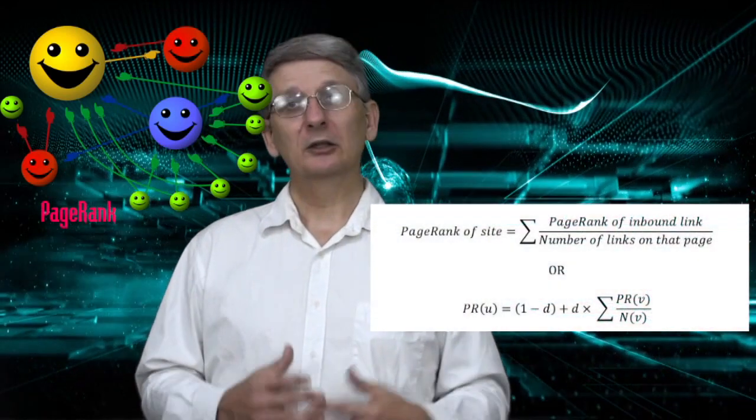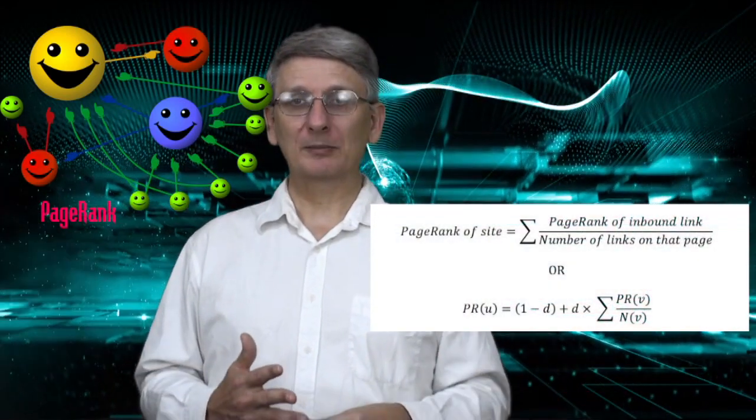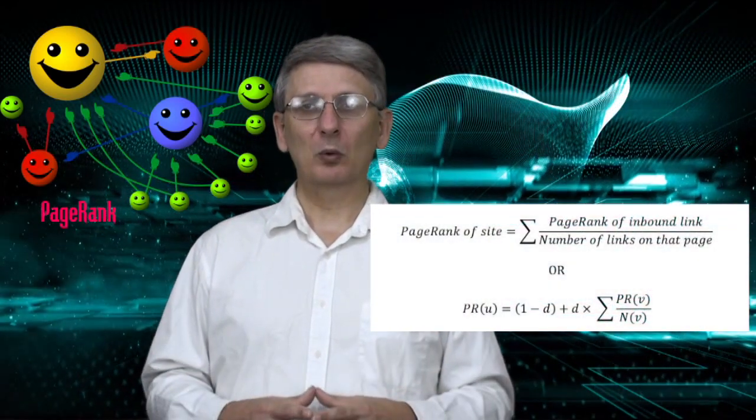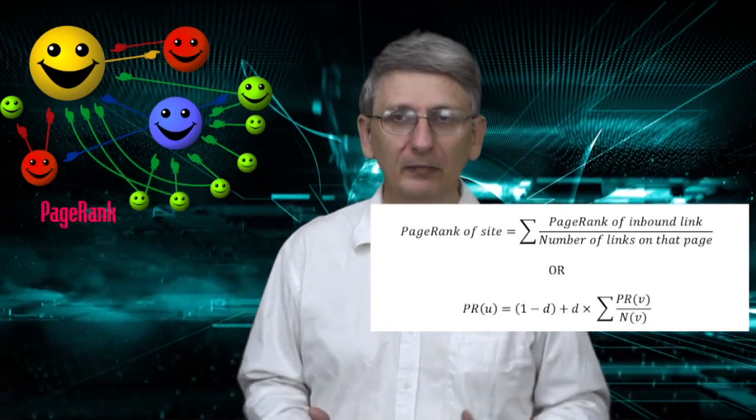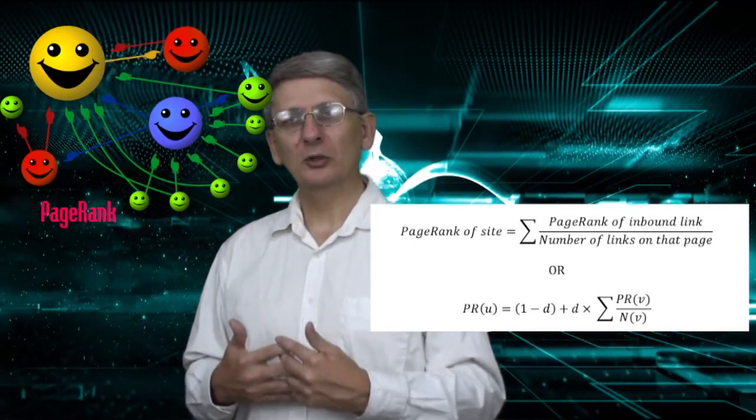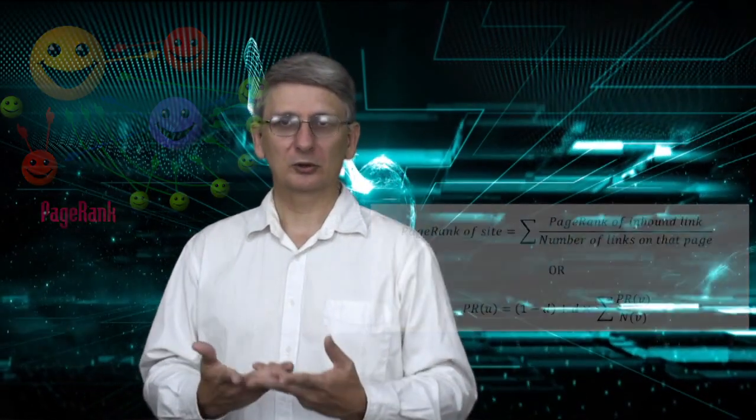We mentioned Google searches. This is known as the PageRank algorithm. And it works by counting the number and quality of links to a web page to determine a rough estimate of how important that website is, using the assumption that the more important websites are likely to receive more links from other websites. And this is what then determines the order of websites that are shown when you do a Google search.